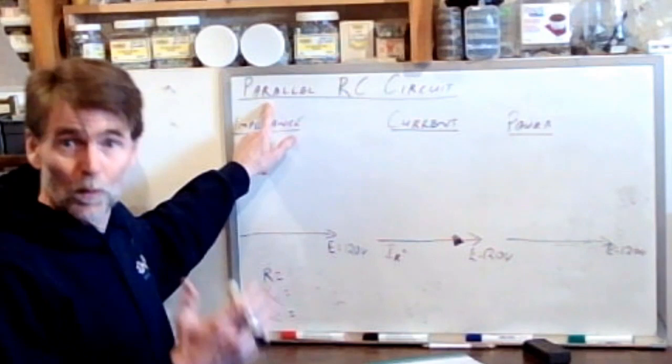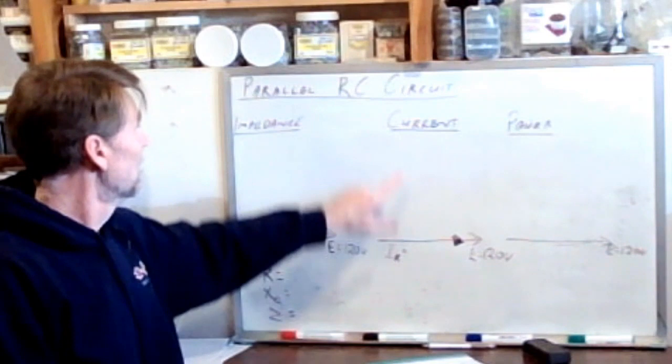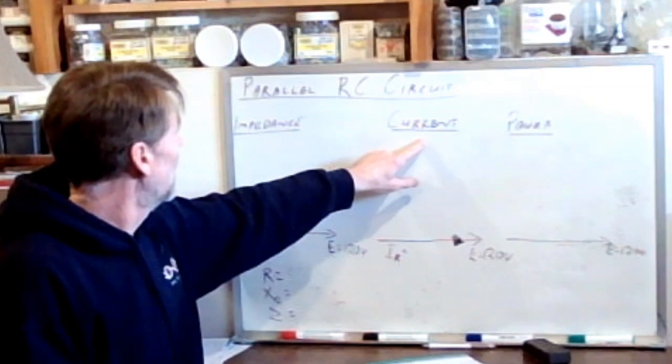Because it's parallel, what's constant? The voltage is constant. So we've got our voltages, our three voltage vectors, which means that the triangle in the middle is going to represent current.